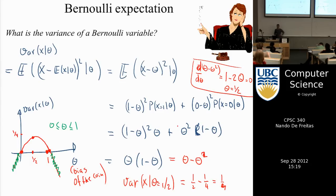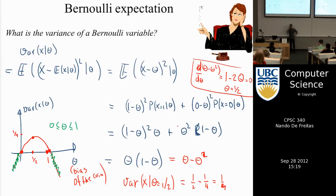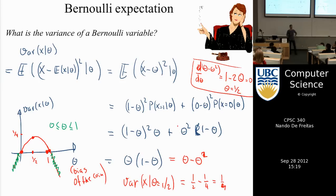We also use the same sort of workings with expectations, and we computed the expectation of the squared of the variable minus the mean, which we define as the variance. And then we even plotted the variance. The variance is theta times 1 minus theta, and if you plot it, you essentially see a parabola that appears there in red, and the maximum happens at one half. So when theta is a half, your variance is largest.